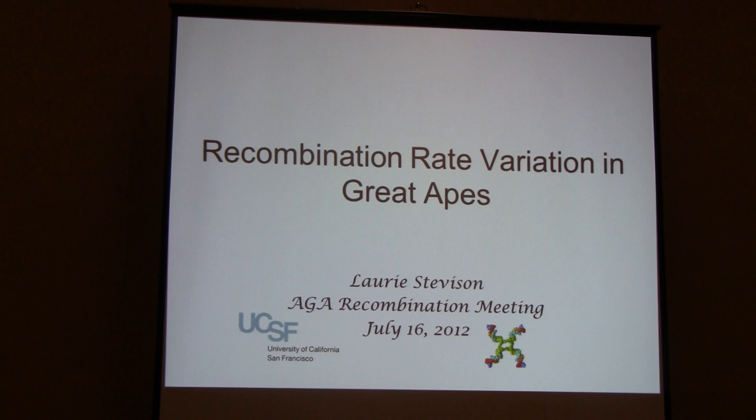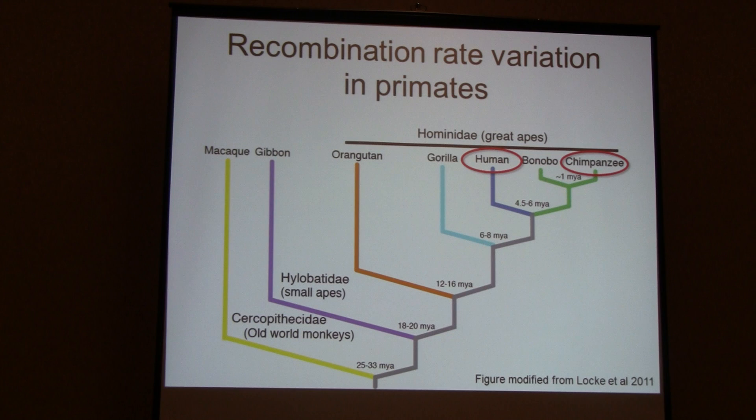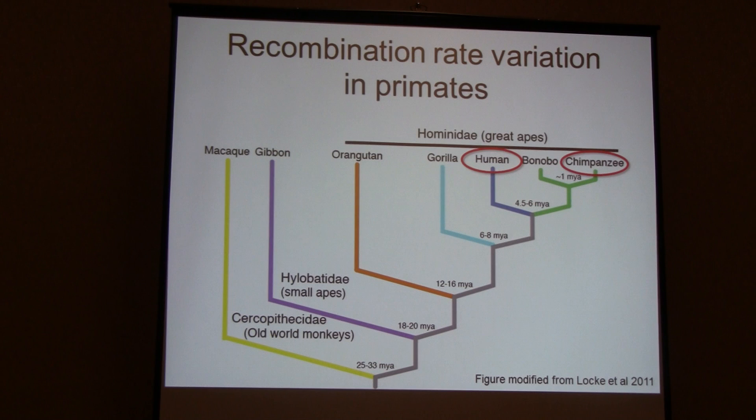A lot of people have given really cool backgrounds on recombination rate variation, so I'm just going to start out by talking about what we know currently about recombination rate variation in primates. Here I'm showing an overview of the phylogeny of most primates, with a black bar highlighting the great apes, and I've circled in red the two species for which we have information about recombination rate variation.